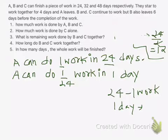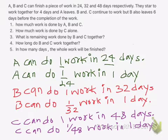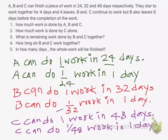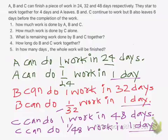Now let us write down the rates for B and C also. B can do 1/32 work in one day, and C can do 1/48 work in one day.